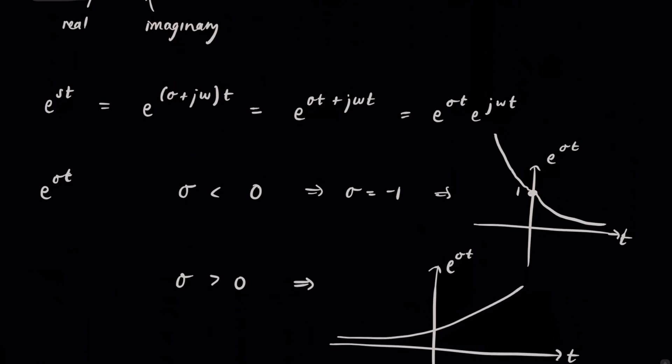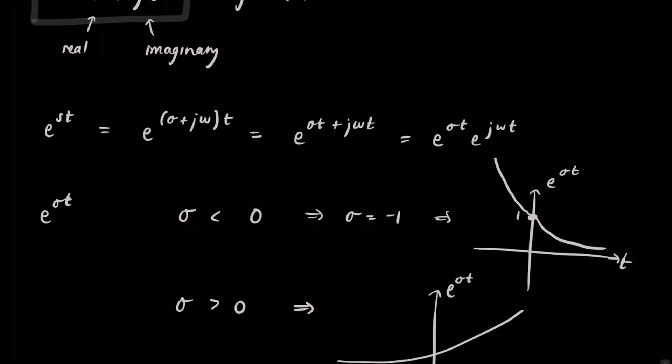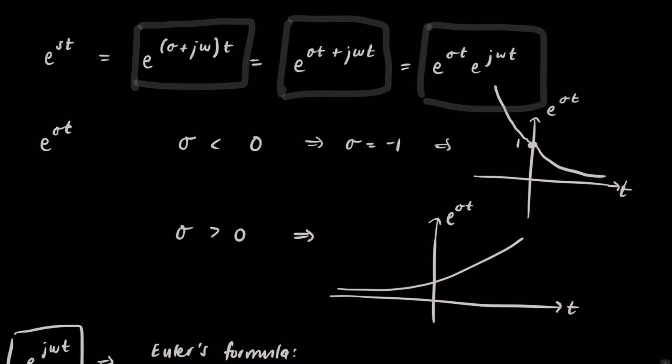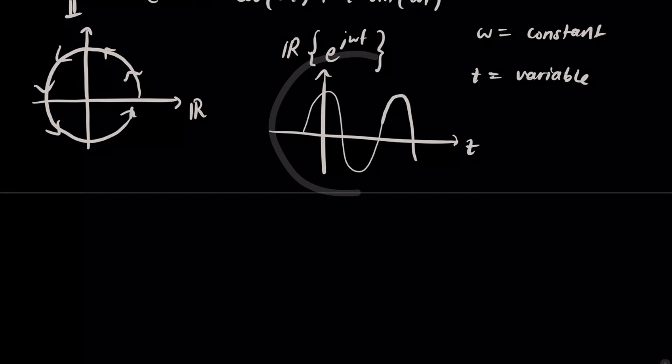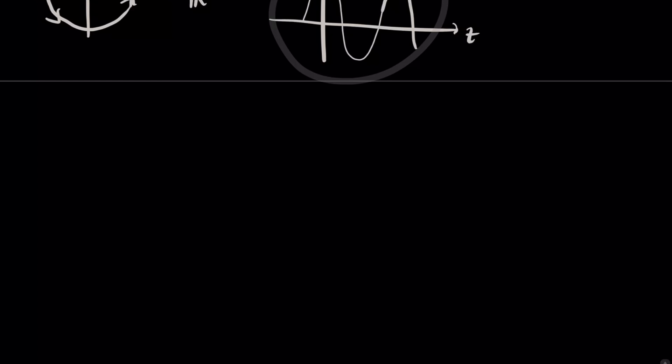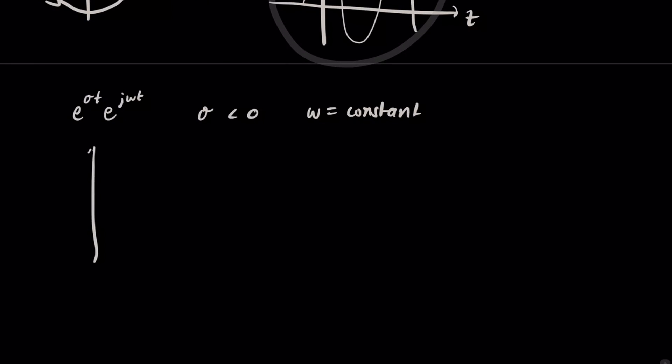So when you combine these two things together, like we did up here, and you combine them together, imagine if we combined something like this one with our sinusoid. Well, we'd get something that scales the sinusoid downwards. So we'd end up with, if we had e sigma t times e j omega t, such that sigma was less than zero, and omega was constant,